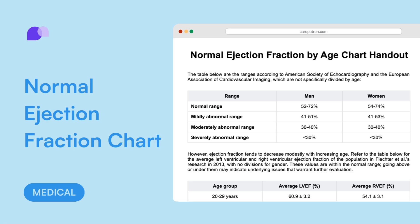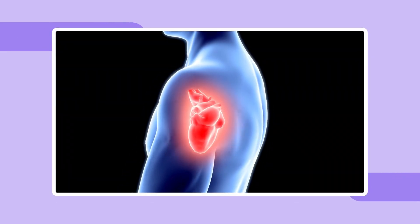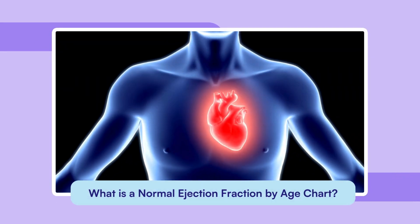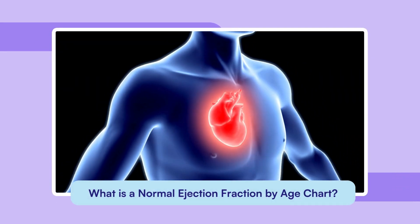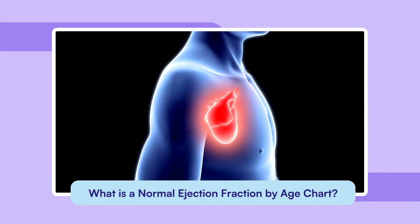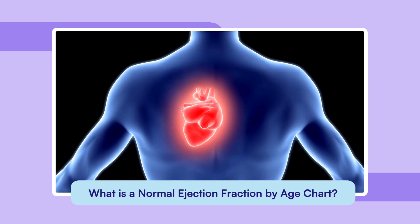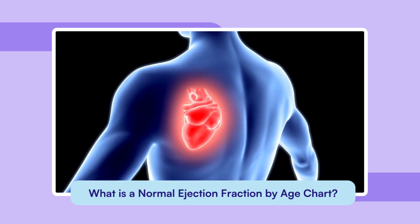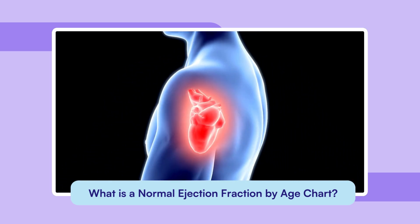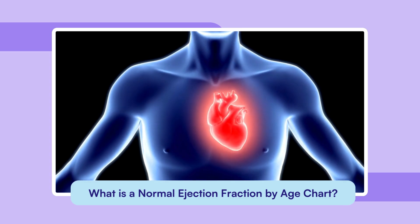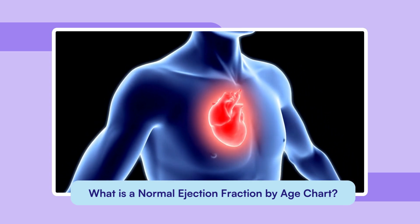A normal ejection fraction by age chart is a graphical representation or table that outlines the expected range of ejection fraction values for different age groups. Ejection fraction refers to the percentage of oxygen-rich blood pumped out of the heart with each contraction.